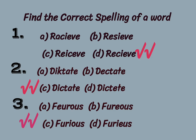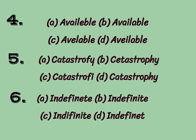All these correct options are verified, so you need not look in the dictionary for confirmation. The fourth, fifth, and sixth questions are also on your screen. In the fourth question, find the correct spelling of 'available' — that is option B. For 'catastrophe,' the correct spelling is option D. And in the sixth question, the word 'indefinite' is spelled I-N-D-E-F-I-N-I-T-E, which is option B. So B is correct for the word 'indefinite.'